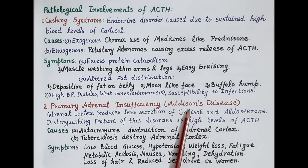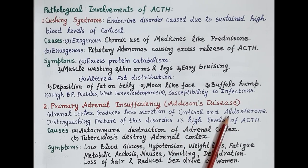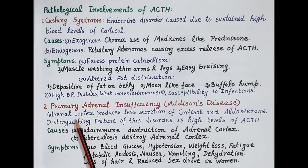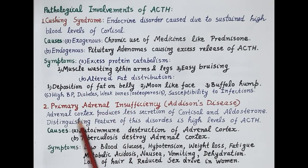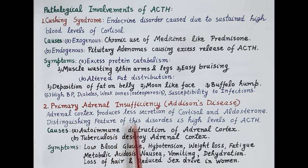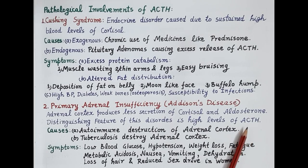Now let's discuss causes and symptoms of Addison's disease. Addison's disease occurs due to reduced secretion of cortisol and aldosterone by the adrenal cortex. This deficiency is because of the inability of the adrenal cortex to produce these hormones, and therefore this disease is termed primary adrenal insufficiency. Since the adrenal cortex is not functioning, secretion of ACTH increases in an attempt to stimulate the adrenal cortex, making high ACTH levels a distinguishing feature of this disease.